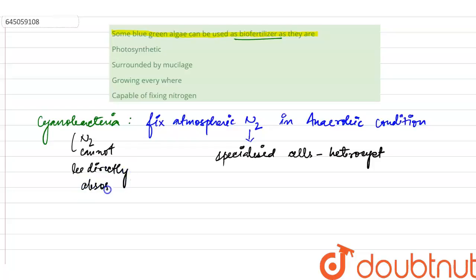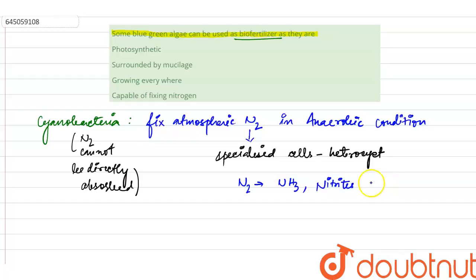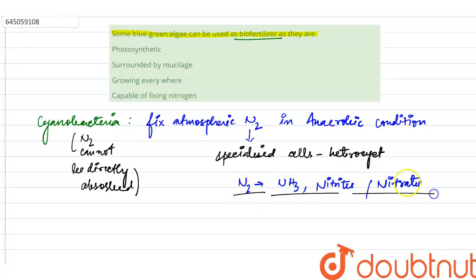So what happens after nitrogen fixation? They are able to convert this nitrogen into ammonia, nitrites, or nitrates. In this form — ammonia, nitrites, or nitrates — it can be easily absorbed by the plants.